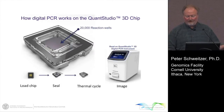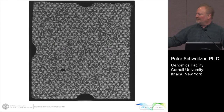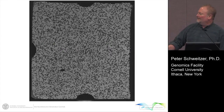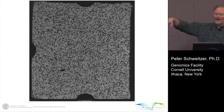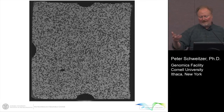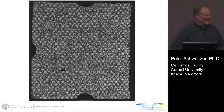This is an image of one of these chips — basically it's about 20,000 wells and a lot of them are negative, the blank ones, and a lot of them are positive. We're working here at about a 10% negative rate.